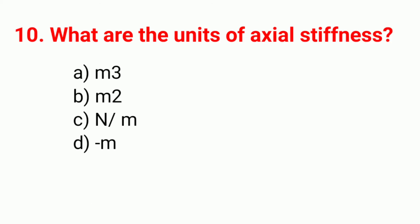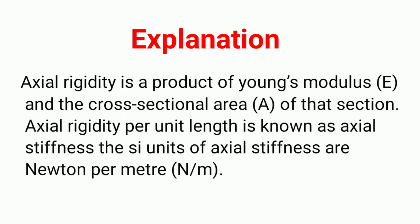Question 10: What are the units of axial stiffness? The correct option is C, Newton per meter. Explanation: axial rigidity is the product of Young's modulus E and the cross-sectional area A. Axial rigidity per unit length is known as axial stiffness. The SI unit of axial stiffness is Newton per meter.